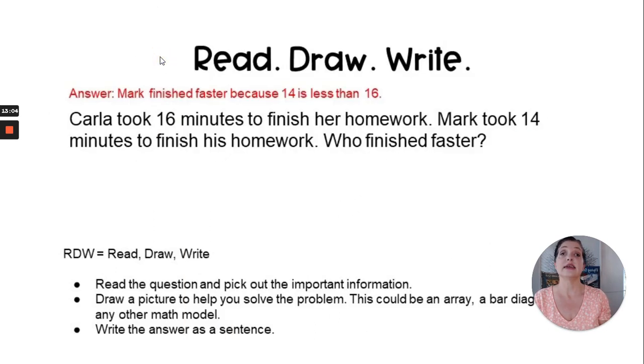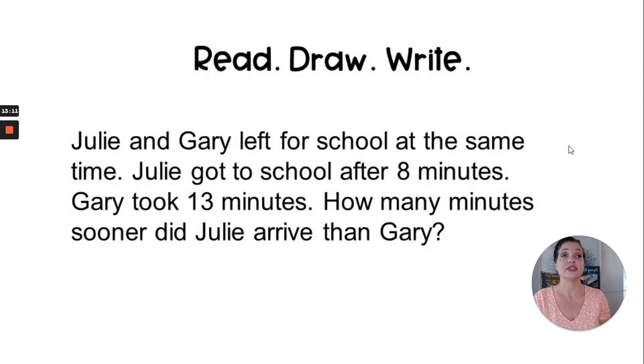Now it's time for you to do your own read, draw, write question. So here's your question. You can get out a whiteboard or a piece of paper. You can also do it on the Jamboard if that's available to you. We're going to read this together. And then you are going to independently, on your own, pick out the most important information, decide which math model you want to draw, and then you're going to write a complete sentence as your answer.